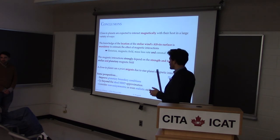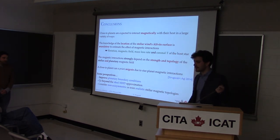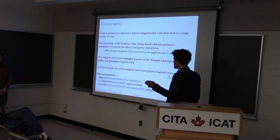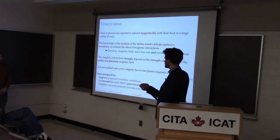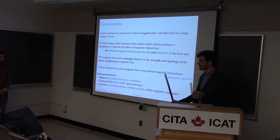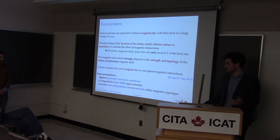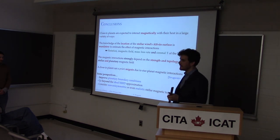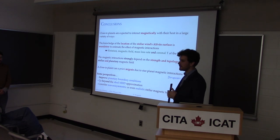These results are published in an ApJ paper out in October or November 2014. Some perspectives: I definitely want to improve my planetary boundary condition, go beyond the ideal MHD approximation — resistive MHD has been introduced by several groups in the PLUTO code, so that's something I could consider — and consider non-axisymmetric or realistic magnetic topologies for the stellar wind to estimate the torque for specific systems. Thank you very much.